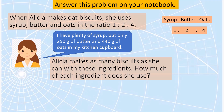Since Alicia wants to make as many biscuits as she can, let us look at the largest part that Alicia will use — the oats. She has 440 grams of oats. How many grams of butter and syrup would she need? Recall that the ratio behaves like a fraction, so we can divide or multiply all terms of the ratio by the same number. To find the amount of butter and syrup we need to multiply by the same number — what do we multiply by 4 to get 440?